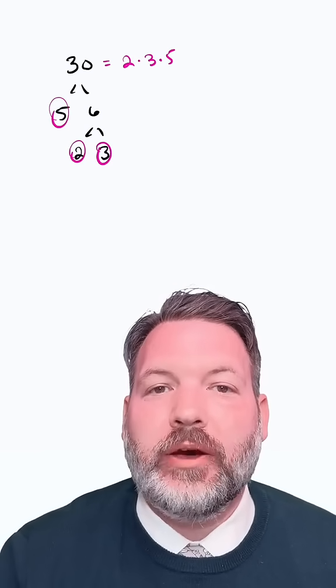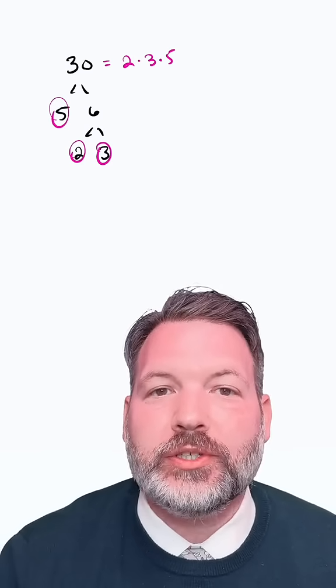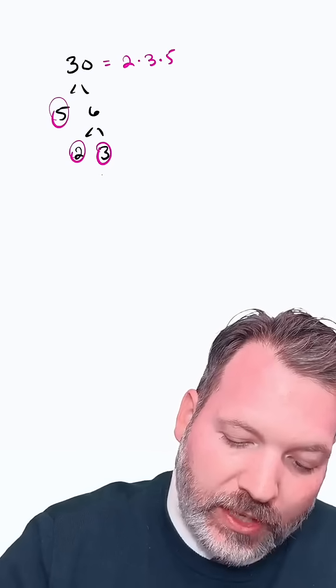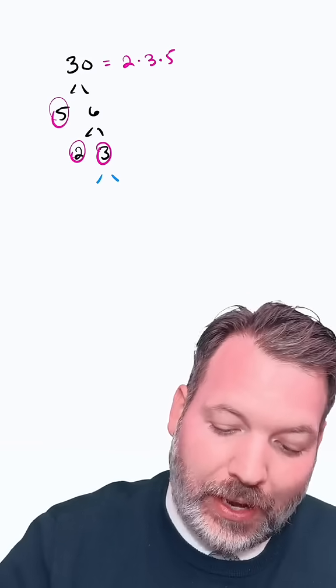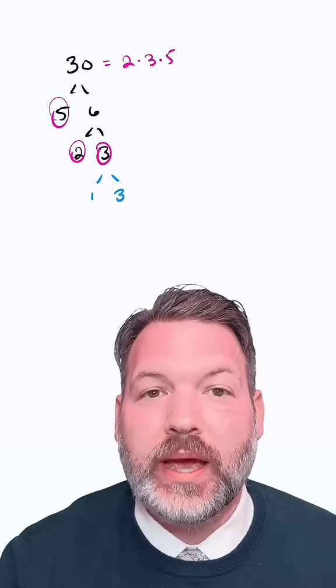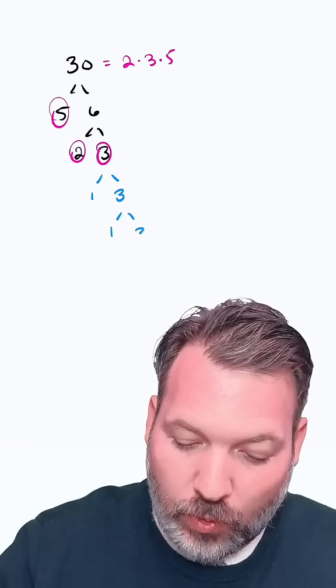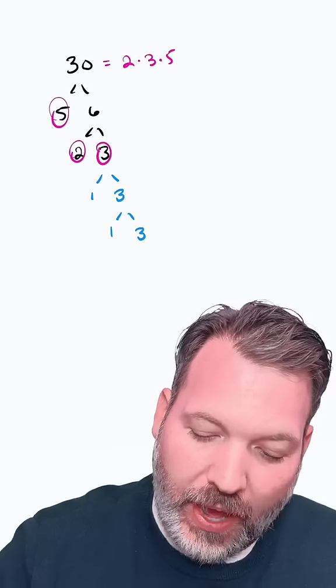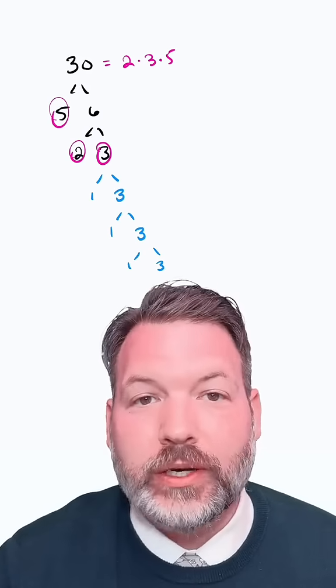If we allowed 1 to count as a prime number, none of these branches could ever end. Because we could always say, oh, well this branch that stops at 3, actually I want that to go on to 1 times 3. And then this 3 again, I want to go on to 1 times 3. And so on and so on for as long as you want to be annoying.